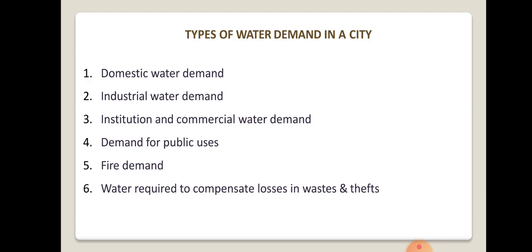Coming to the different types of water demand in any city: water demand is the total amount of water that a population or community demands or requires to satisfy its needs. These demands may be classified as: domestic water demand, industrial water demand, institution and commercial water demand, demand for public uses, fire demand, and water required to compensate for losses due to wastage or theft.